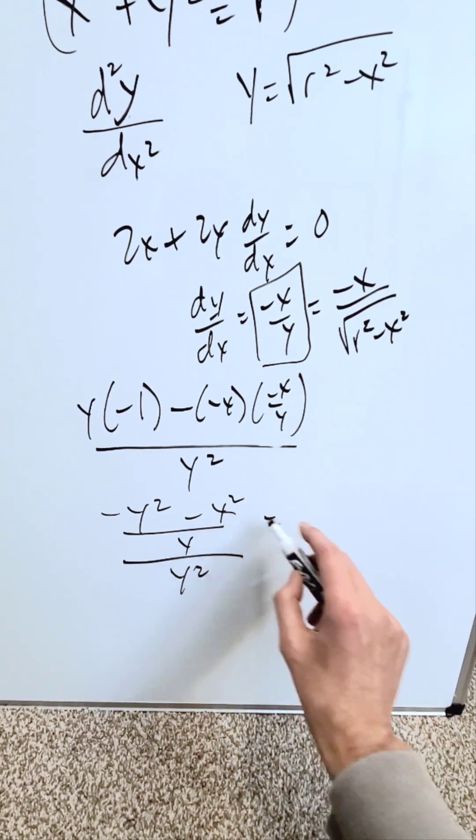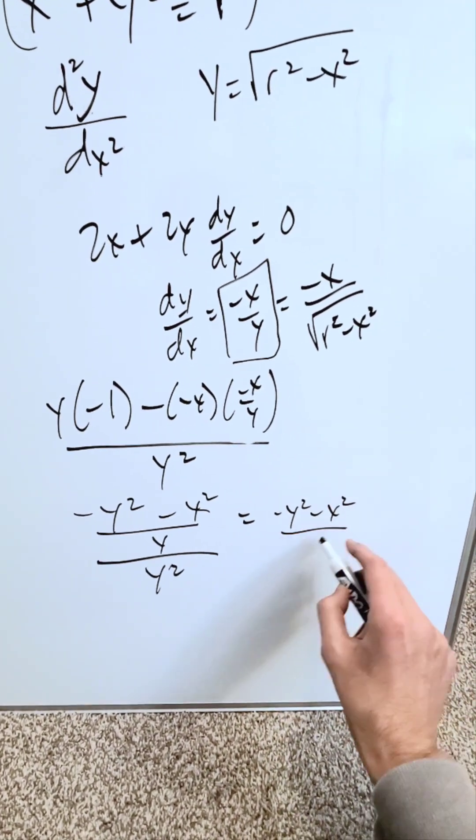When you clear it out, you'll have minus y squared minus x squared over y cubed.